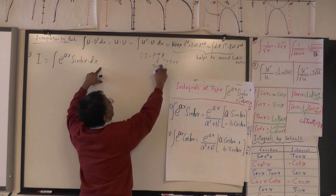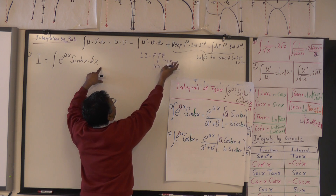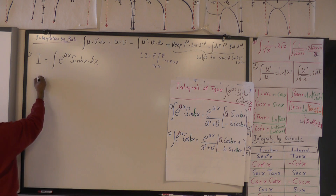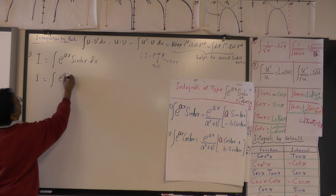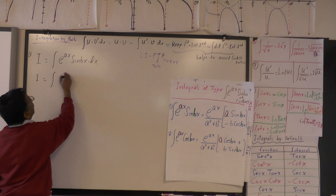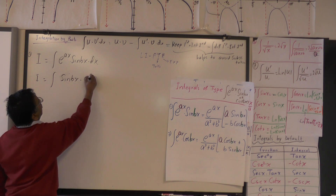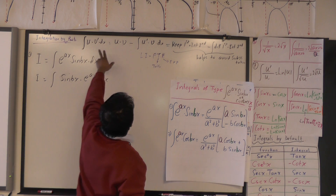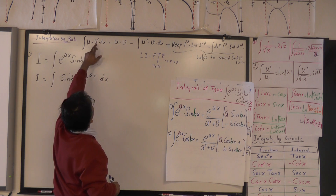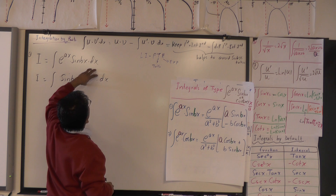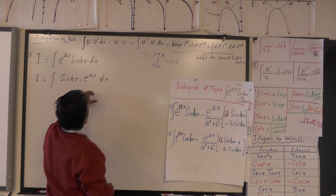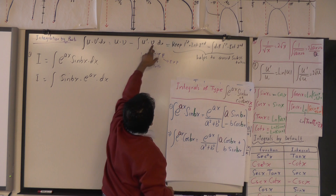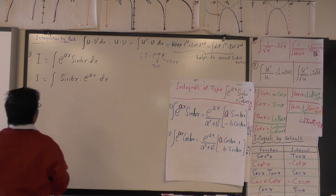It helps to get the answer quickly if you use the trig first and the exponential second. Even the textbook puts exponential first and trig later, but what I will do is write the trig first. So I equals integral of sine bx times e raised to ax dx. I'm going to use this form where u is sine bx and v' is e raised to ax. So v is the integral of that second part, the integral of this derivative.